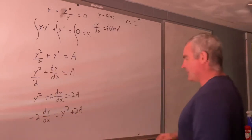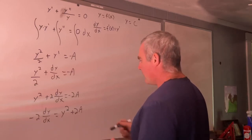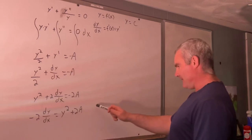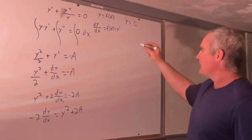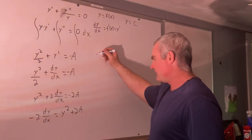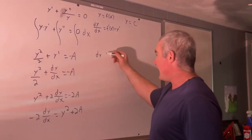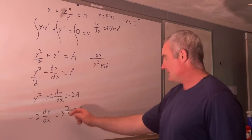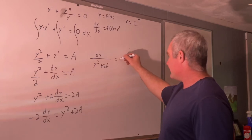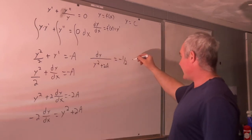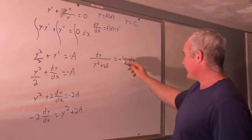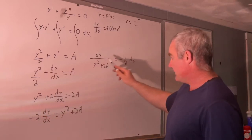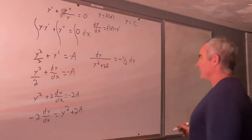So now from here, let's go ahead and multiply both sides by one half dx. I'm just going to do it. So this is going to give us dy over y squared plus two a is equal to negative one half dx. And I believe that checks out. This negative one half comes from multiplying both sides by negative one half. That's good. That's fine.